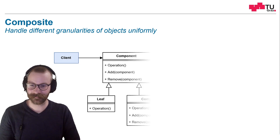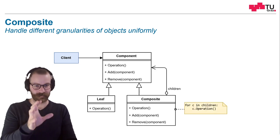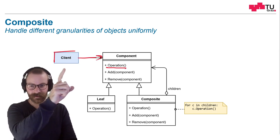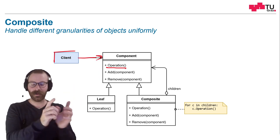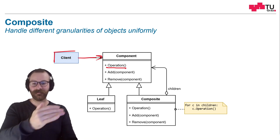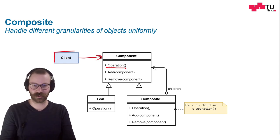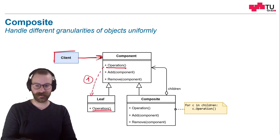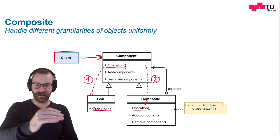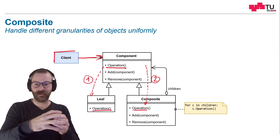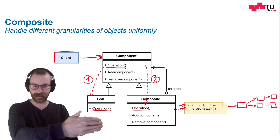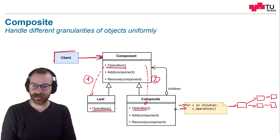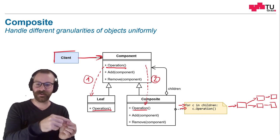How does this look like? We have a client which is calling some method, some operation from the component. And we have now two variants, two possibilities. Either we are on a leaf — we are an actual object which should be called. Or we are on an aggregate, an intermediate node, and we just have the purpose of rerouting this call to another object, to an actual child, to an actual leaf. Then this will be rerouted over and over again. The composite part has the purpose of transferring the call to all its children.